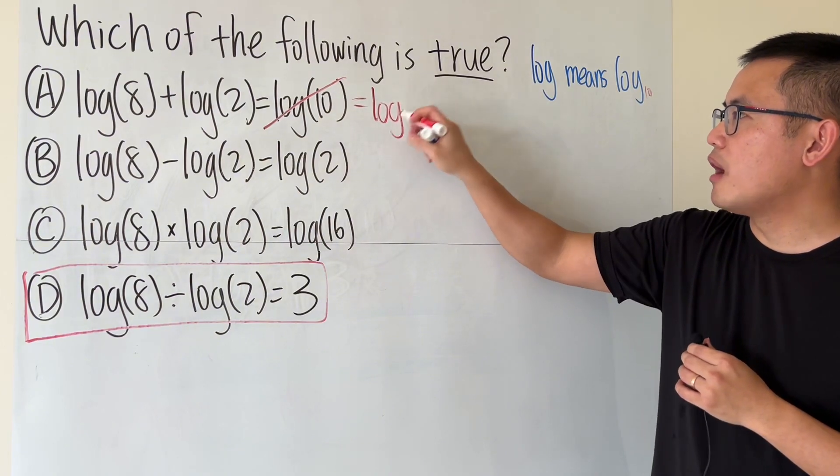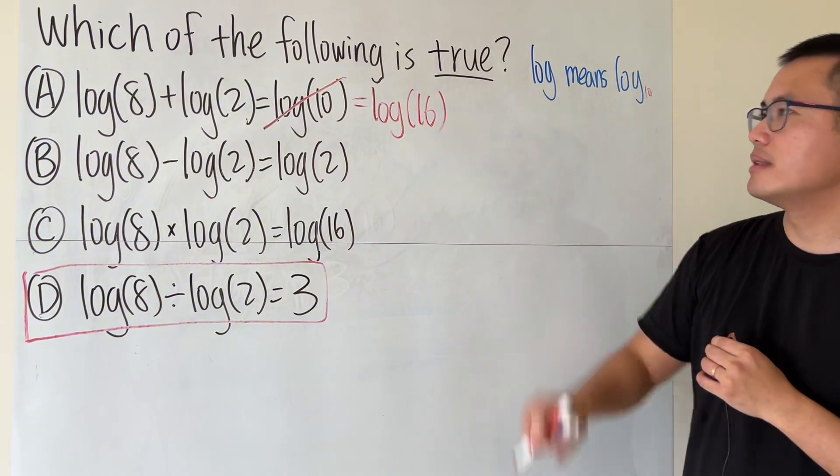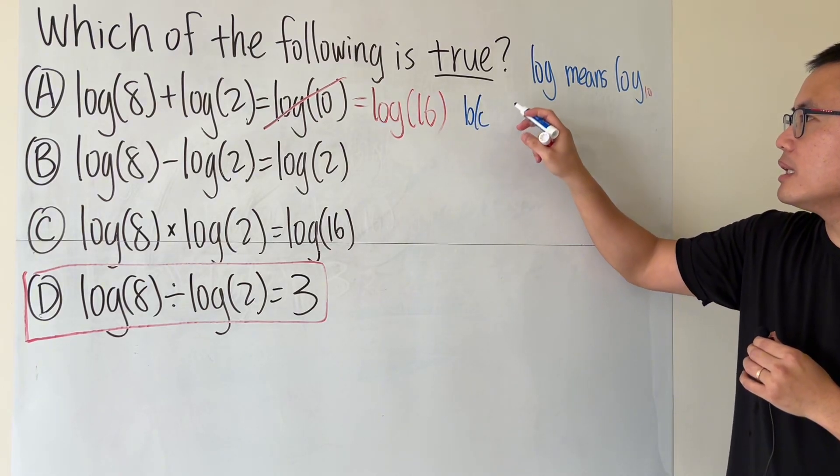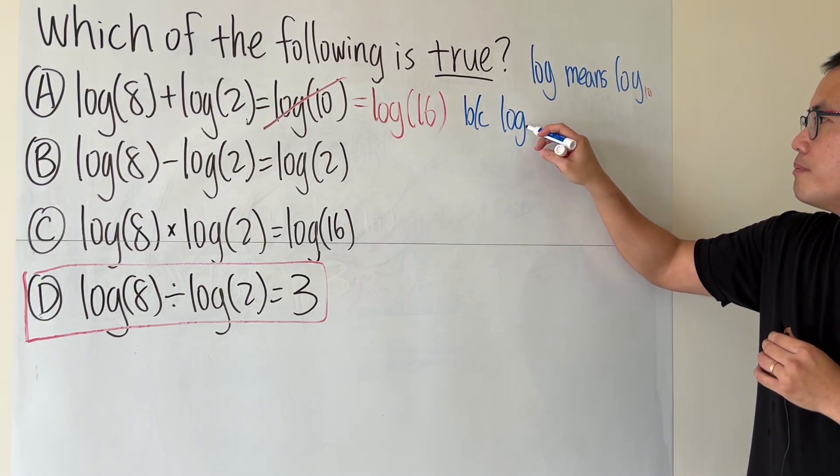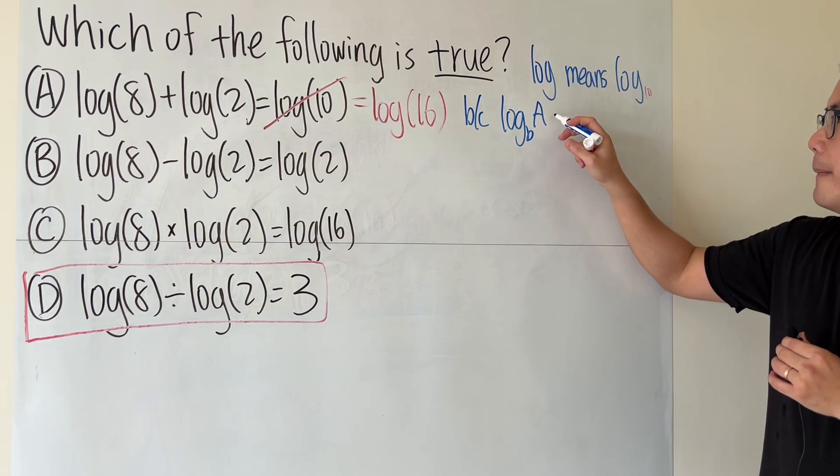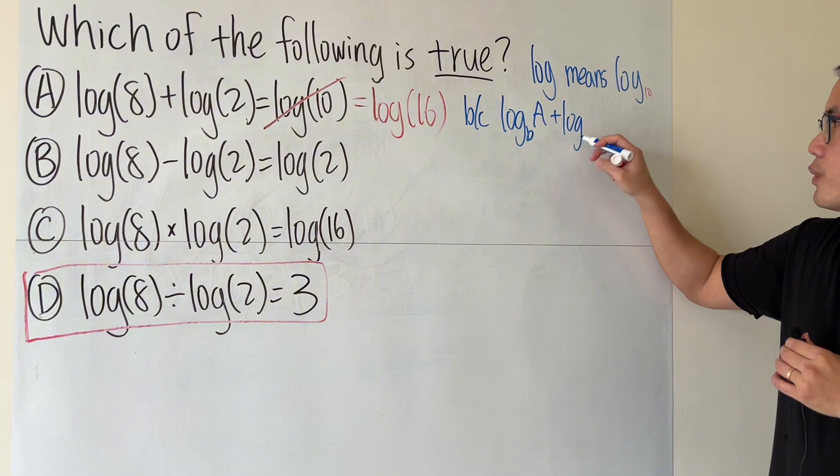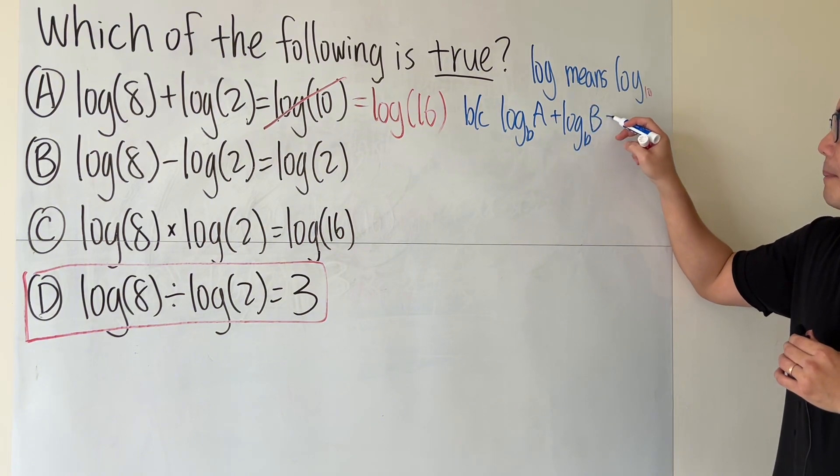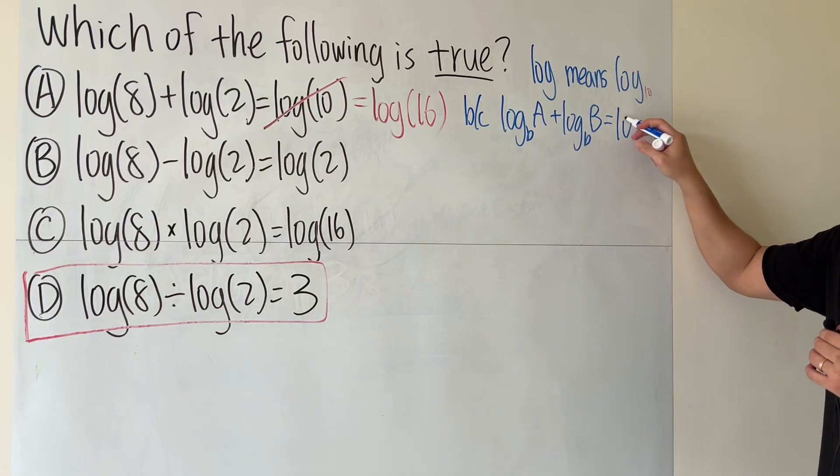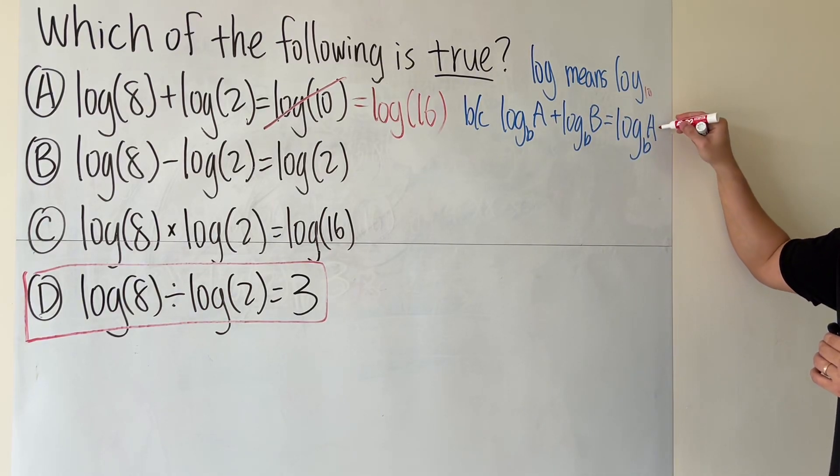So the correction is we have log of 16. The property that we use is: log base b of something inside a and we add it with another log with the same base b of something else c, we can combine them into just one logarithm with the same base b and then we multiply the insides together, a times c.